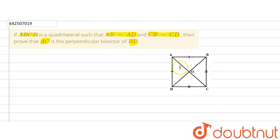To prove that AC is the perpendicular bisector of BD, we need to prove that all these angles — angle AOB, angle BOC, angle COD and angle AOD — are all equal to 90 degrees. We also need to prove that OA equals OC and OD equals OB, to show that these two lines are perpendicular bisectors of each other.